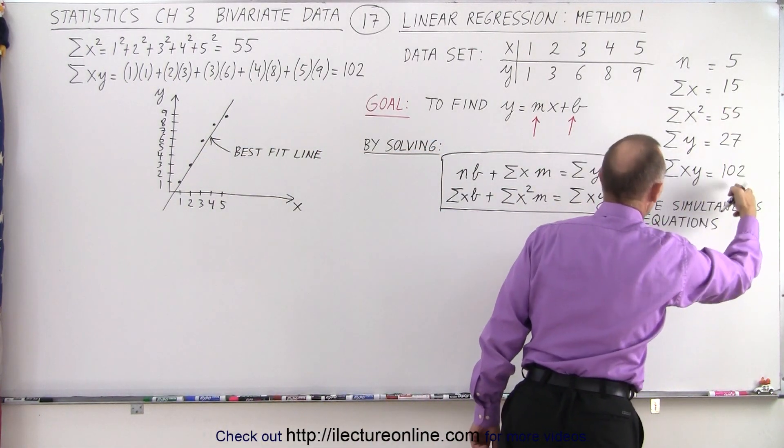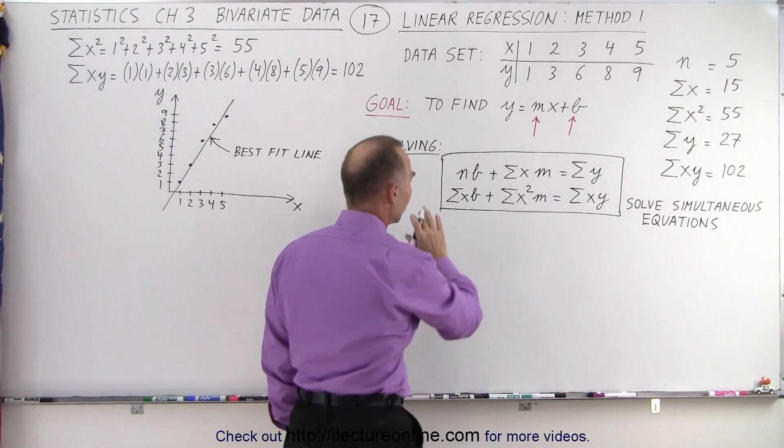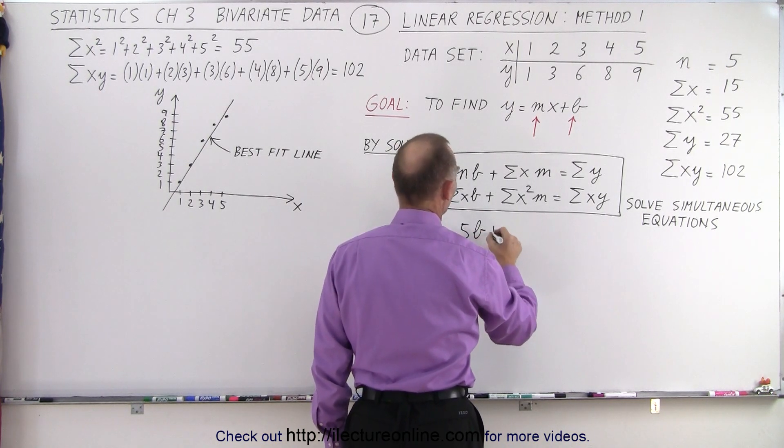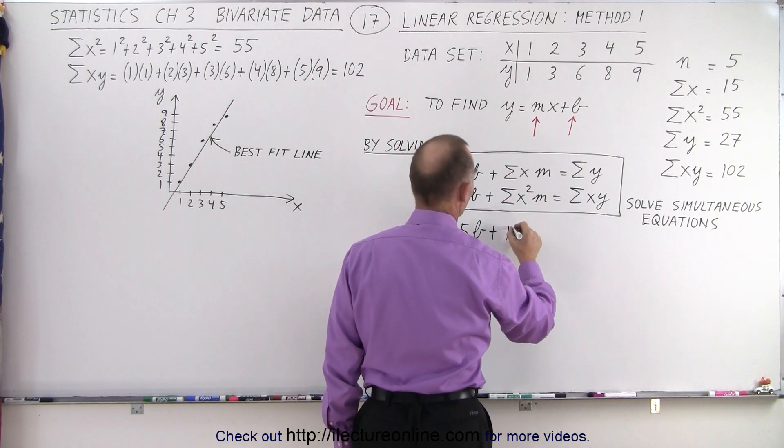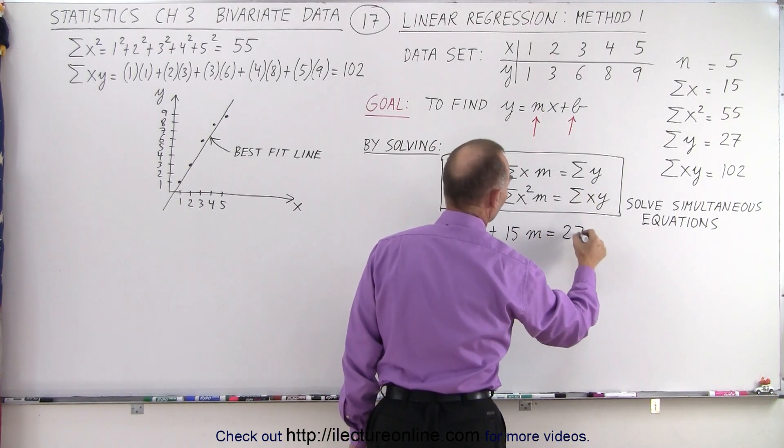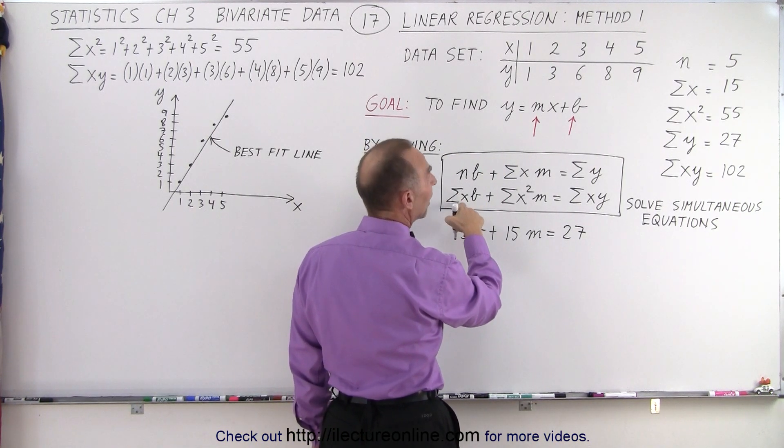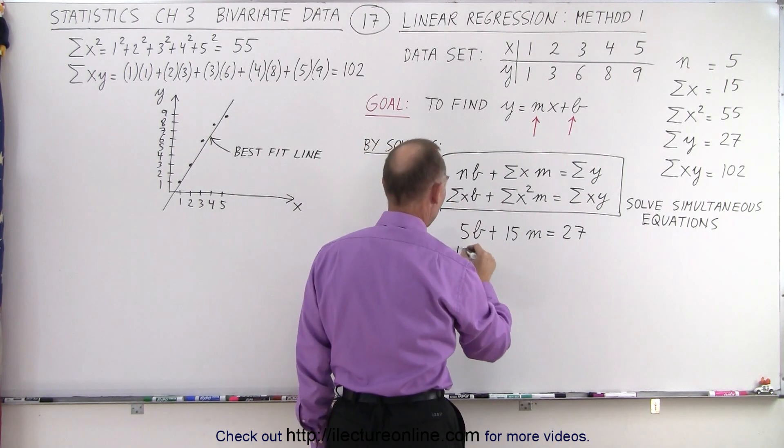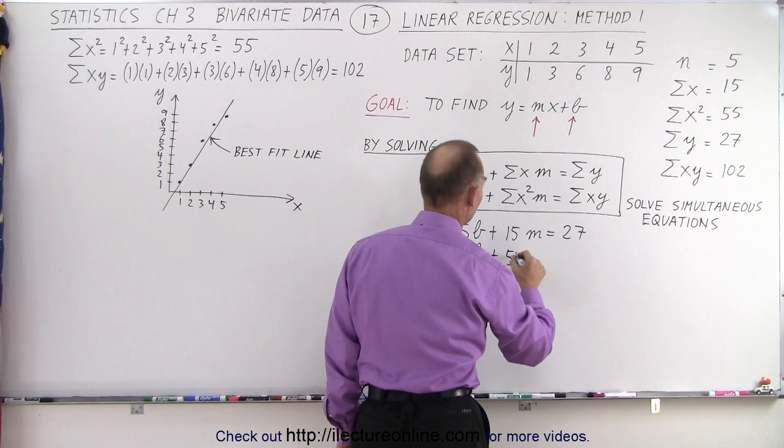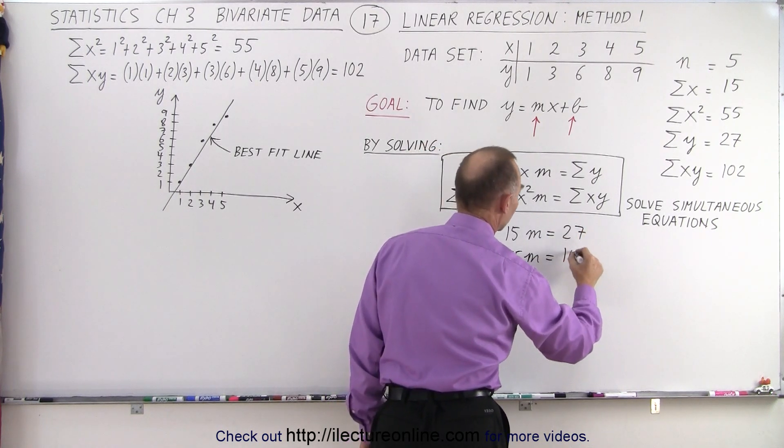So now we'll go ahead and plug these coefficients into our two equations so we can solve them simultaneously. So our first equation becomes n times b, which is 5b, plus the sum of all the x's, which is 15m, equals the sum of all the y's, which is 27. The second equation, the sum of x times b, which is 15, 15 times b, plus the sum of all x values squared, 55m, equals the sum of the product of x times y, which is 102.